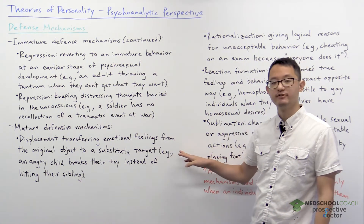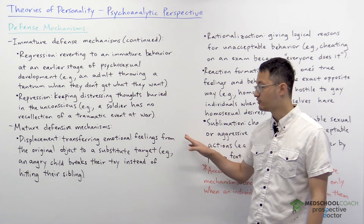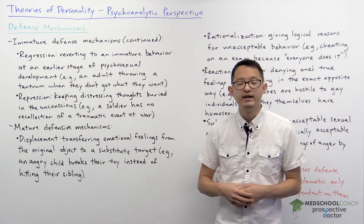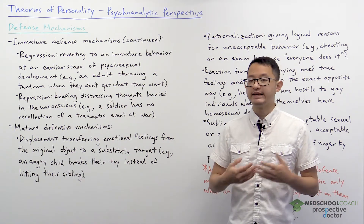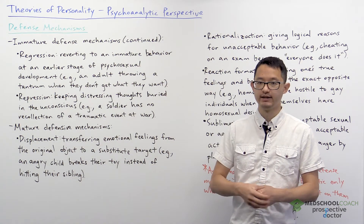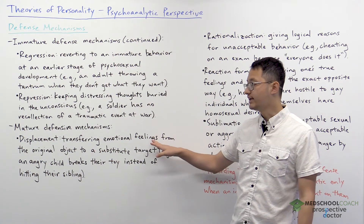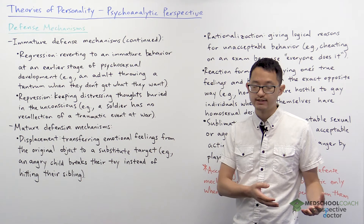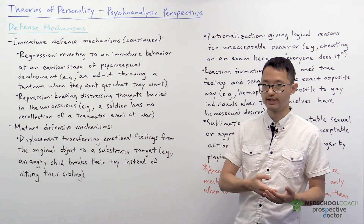We have displacement, which is transferring emotional feelings from the original target to a substitute target. An example would be a child who is angry at their sibling. Rather than hitting their sibling, the child goes and breaks their toy. So the child is transferring their feelings of anger from the original subject, their sibling, to a substitute target, the toy.